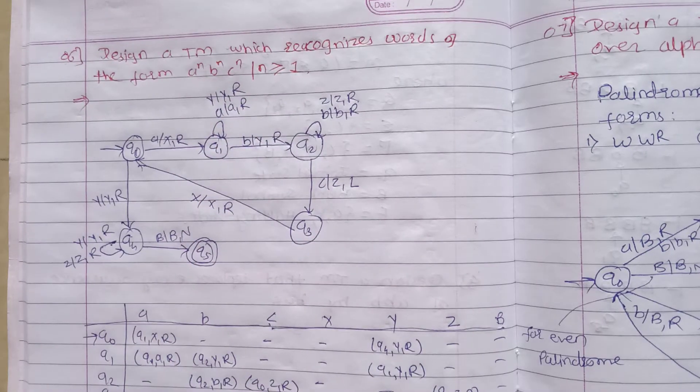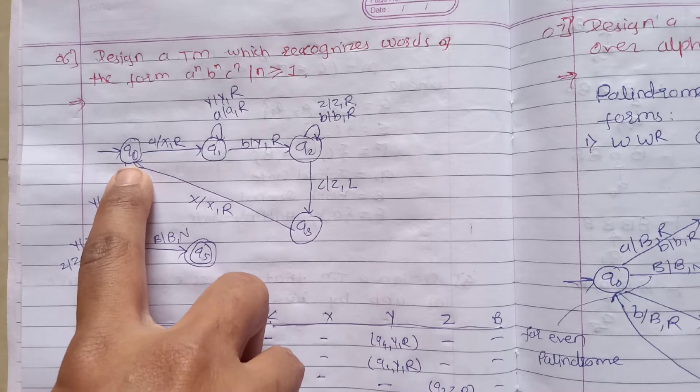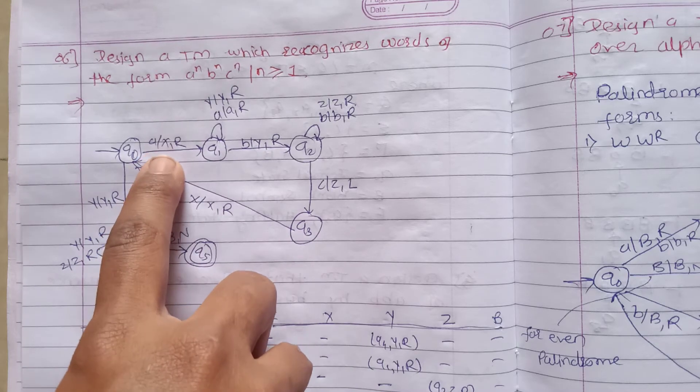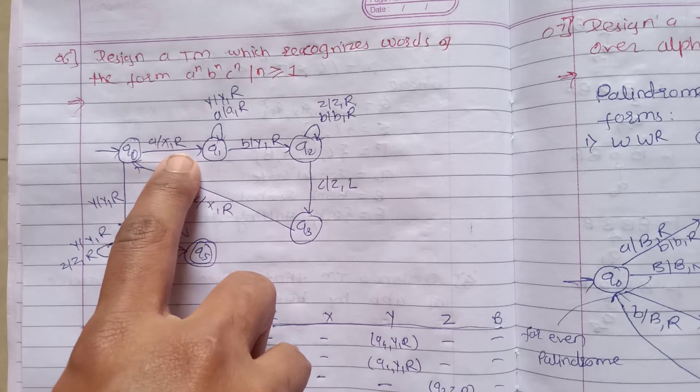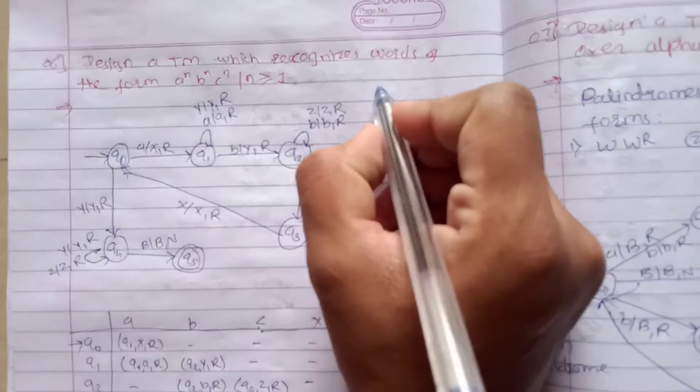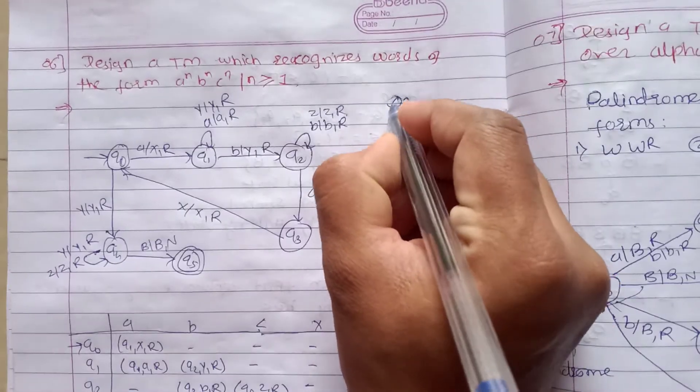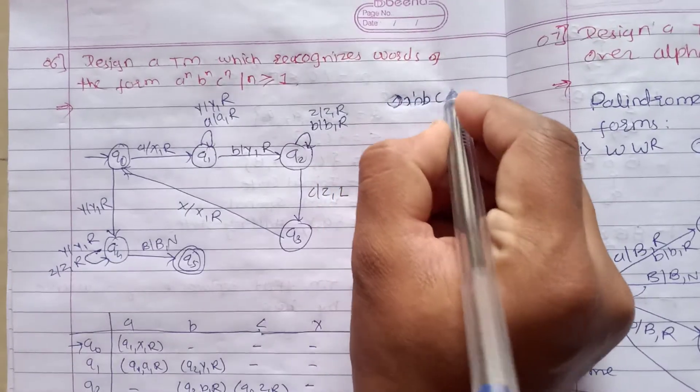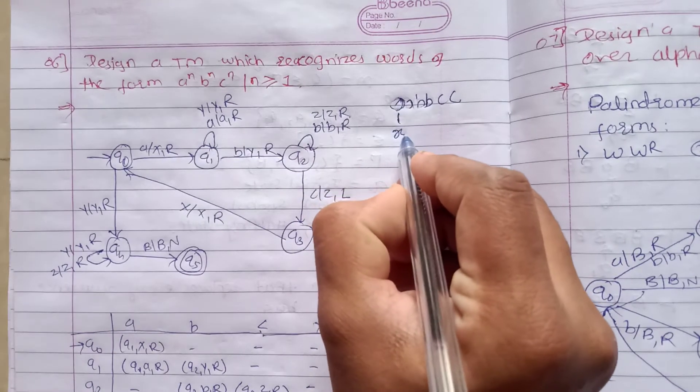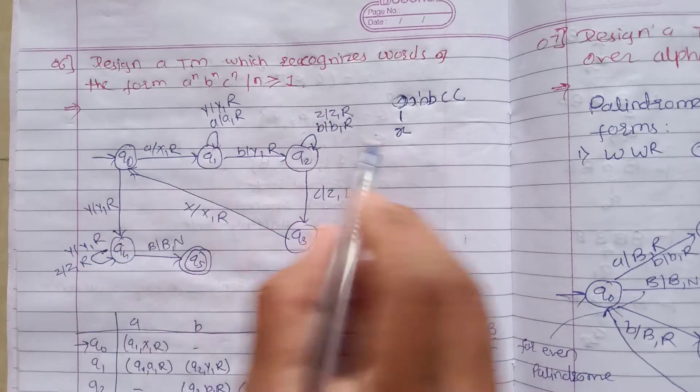See here we are starting from the initial state q0. First input is a, so we are converting it into x and movement is right. If I have n equals 2, the word will be aabbcc. So first at q0 we read a and convert it to x, movement is right.